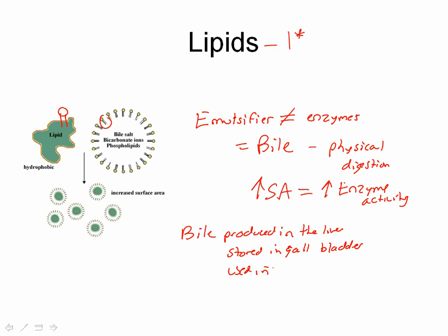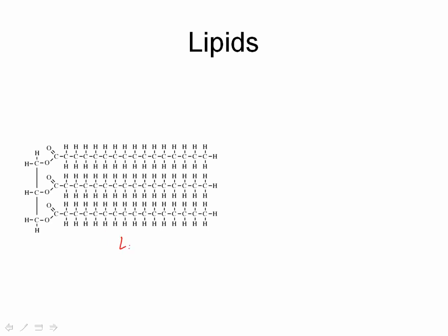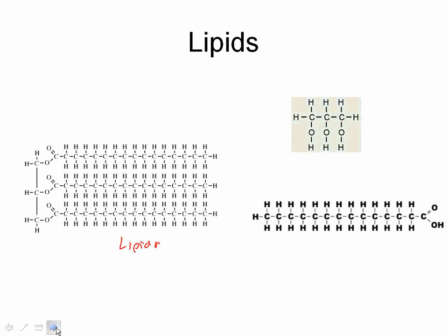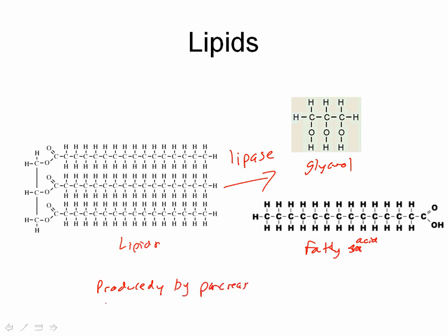Bile is used in the small intestine. Now let's talk about the actual enzyme that breaks down these triglycerides or lipids. We remember that they get broken down into glycerol and fatty acids — this one would be a saturated fatty acid. The enzyme that breaks down lipids is called lipase. Lipase is produced by the pancreas and used in the small intestine. Don't forget our pH in the small intestine is around 7 to 8. So those are our three macromolecules that get broken down, with their enzymes produced in different spots.